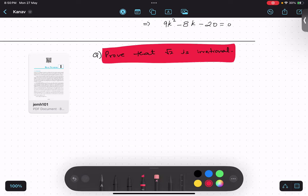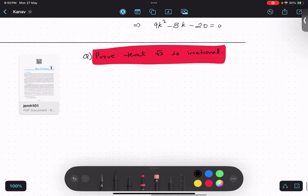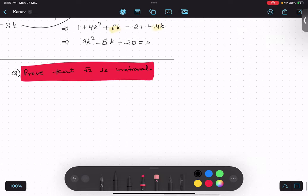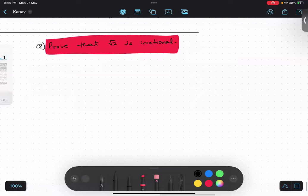If they are asking us to prove that root 2 is irrational, let me tell you there are only two types of questions when they are asking us individually: root 2, root 3, root 5, root 7 - numbers which are prime. That's one level of question which we are going to do right now.